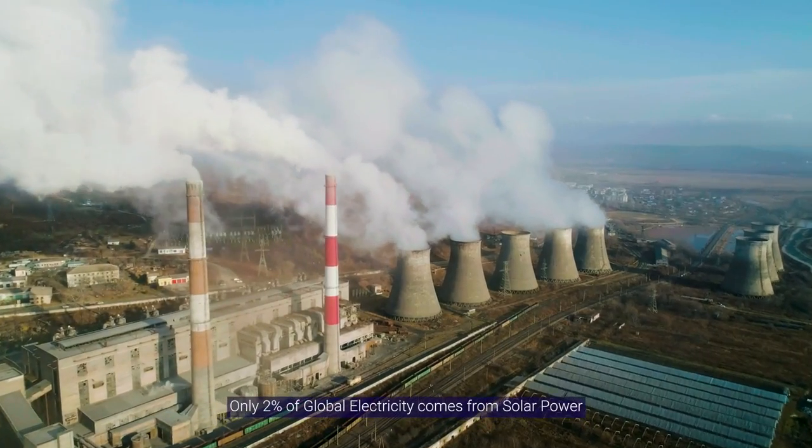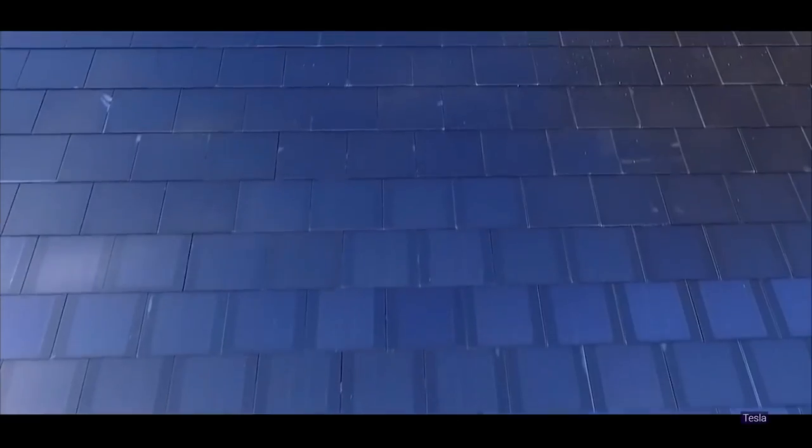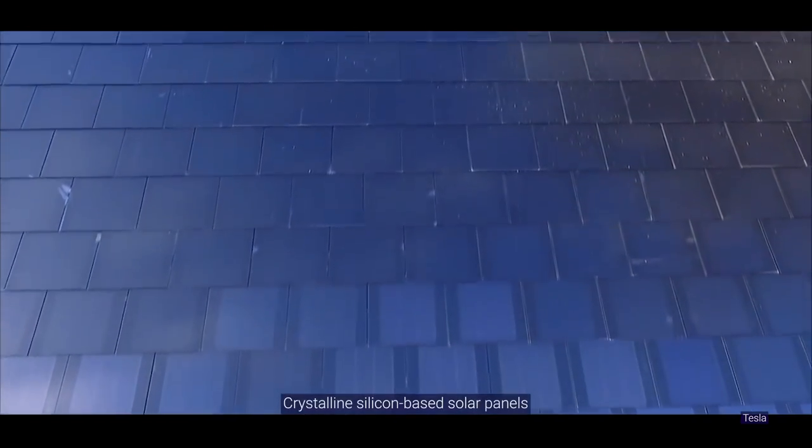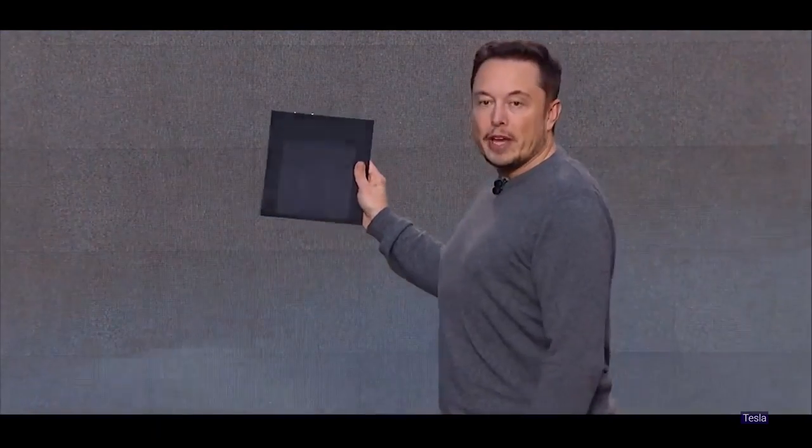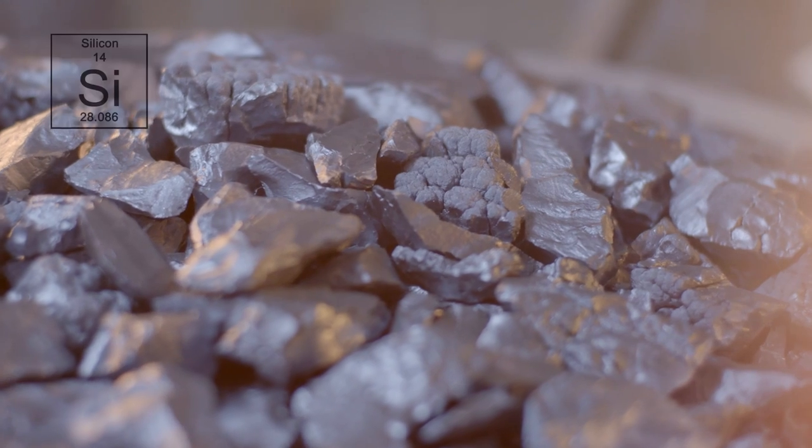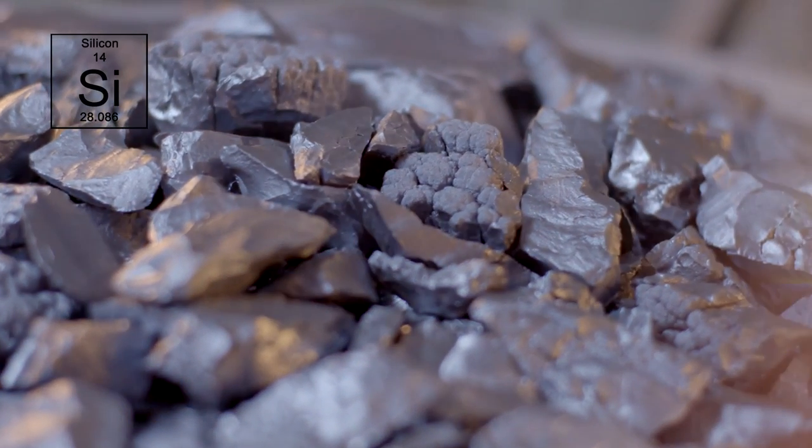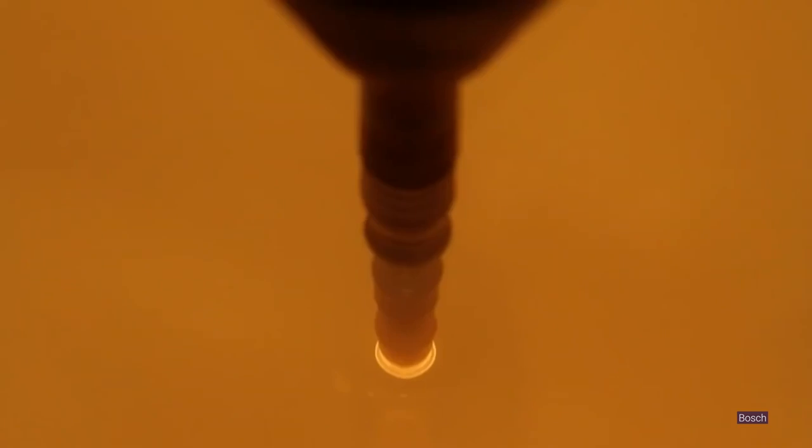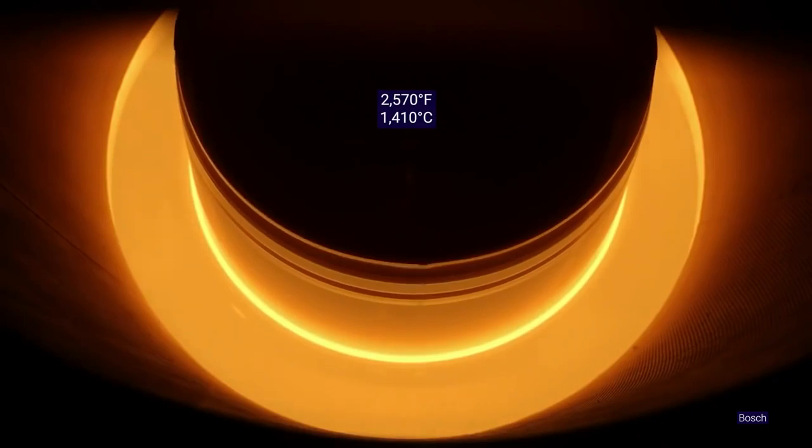Currently, only 2% of global electricity comes from solar power, and 90% of that comes from crystalline silicon-based solar panels, the dominant material technology. While abundant, silicon has downsides related to efficiency, manufacturing complexity, and pollution that prevent it from being an absolute no-brainer.